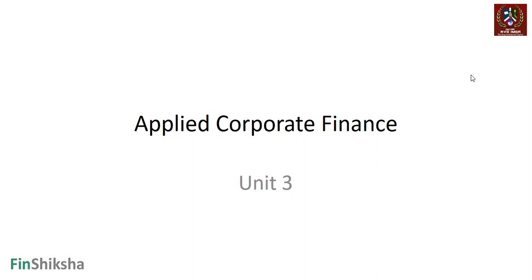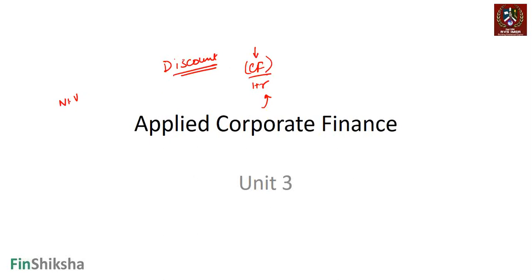This unit on applied corporate finance will measure investment returns for any project. So far we have learned about the discount rates we are going to use — the 1+R part of our cash flow equation. In this session, we're going to look at what the cash flow part is, how we arrive at it, and what kind of returns are generated. We will also revisit our NPV versus IRR rules — when NPV works better and when IRR works better, and for what kinds of projects each is preferable.